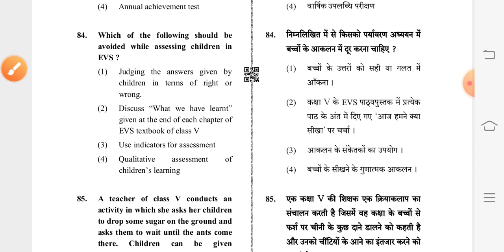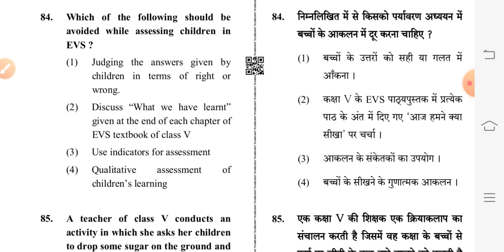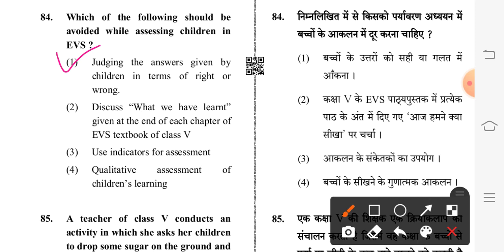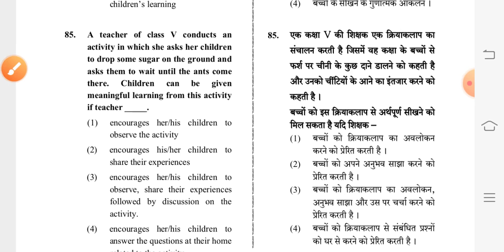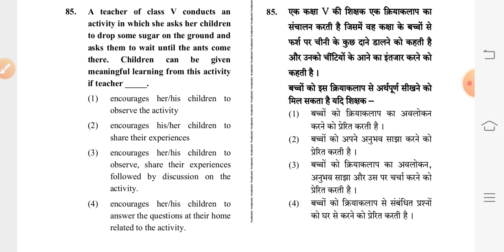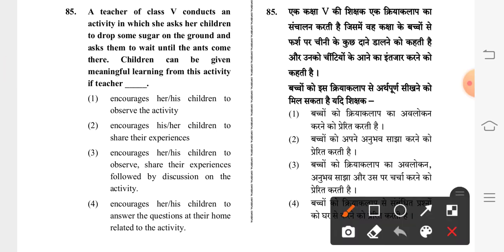Question 84: which of the following should be avoided while assessing children in EVS? First option is correct: judging the answer given by children in terms of right or wrong. Question 85: a teacher of Class 5 asks children to drop sugar on the ground and wait until ants come. Children can be given meaningful learning from this activity if the teacher — third option is correct: encourages children to observe, share their experiences, followed by discussion on the activity.